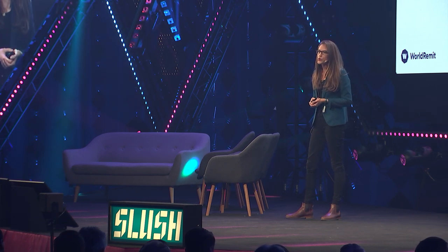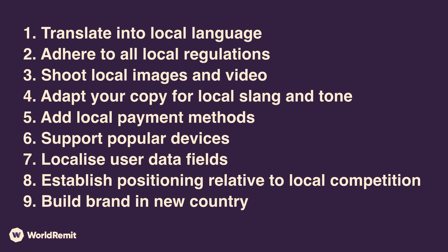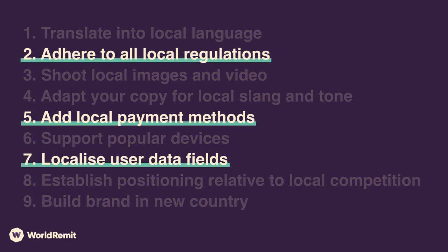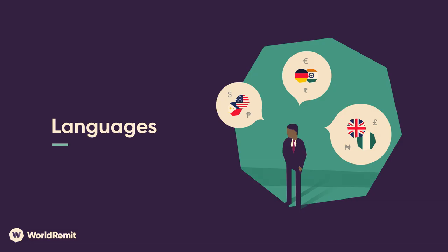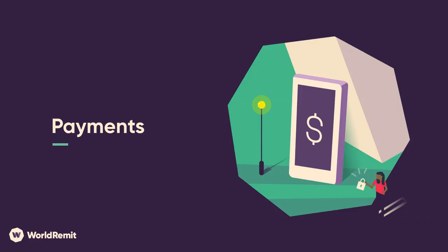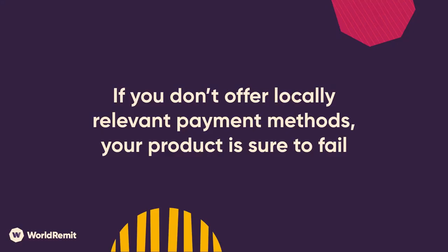The fourth shortcut is the ruthless prioritization of user experience improvements. To return to my laundry list from earlier, all of those things are important to create a truly local feeling product, but probably not all of them are going to be deal breakers that will truly prevent users from getting started. You need to be rigorous and focus on the ones that are actually going to move the needle. In my experience, the single most important thing you can do to make your product a success in a new market is to make sure you have the right payment methods. If you don't offer locally relevant payment methods, your product is sure to fail.